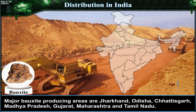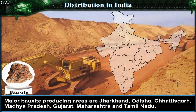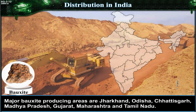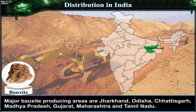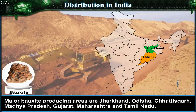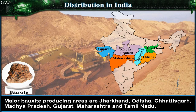Bauxite. Major bauxite-producing areas are Jharkhand, Odisha, Chhattisgarh, Madhya Pradesh, Gujarat, Maharashtra and Tamil Nadu.